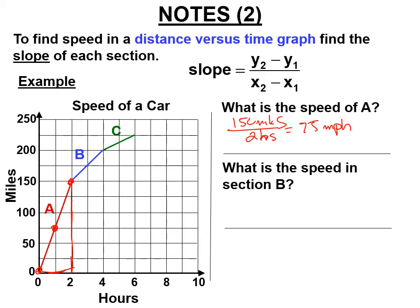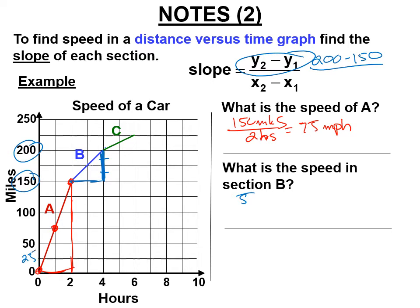In section B, we went 50 miles — that's 200 minus 150. Each box is worth 25, so it's two boxes, which is 50 miles, in two hours. So in section B, the car is going 25 miles per hour. Notice it bent down — it's slower.